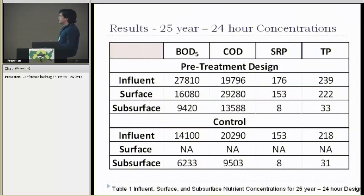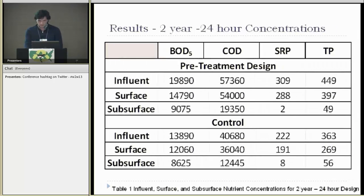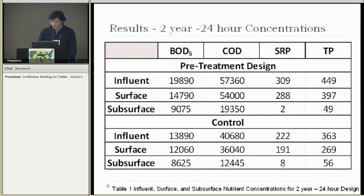Here are the results. This is a lot of numbers, but here's the influent, surface, and subsurface for the pre-treatment design and the control for the 25-year 24-hour design storm. As you can see, the BOD and COD are pretty high in the influent for both applications, and phosphorus was reduced significantly. BOD and COD were still pretty high in the subsurface and surface — not as well reduced for the 25-year. For the 2-year 24-hour, it's sort of the same thing: really good TP reduction and some BOD and COD reduction.